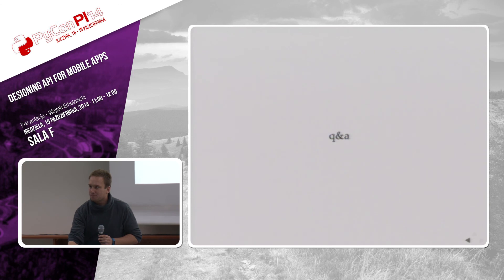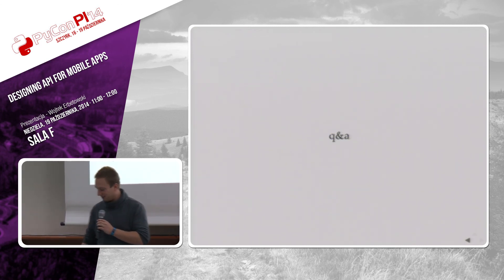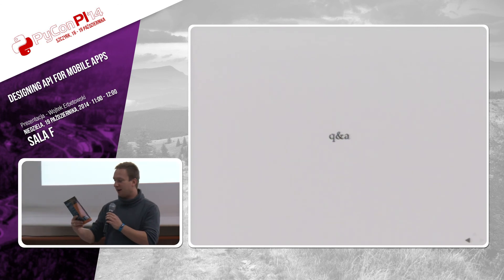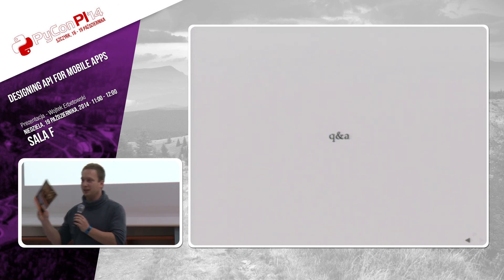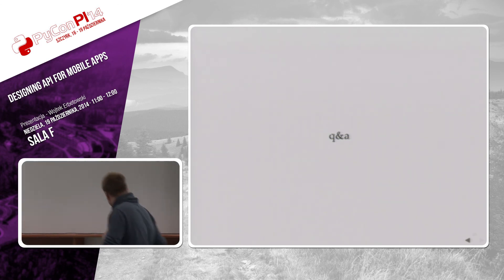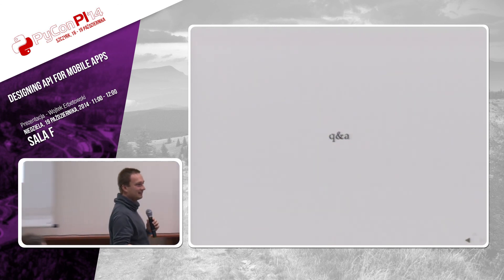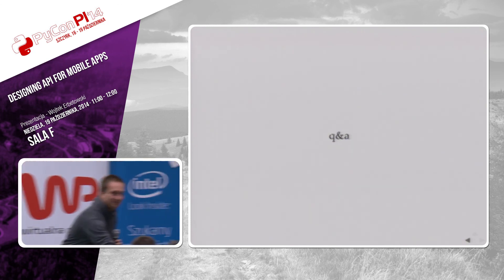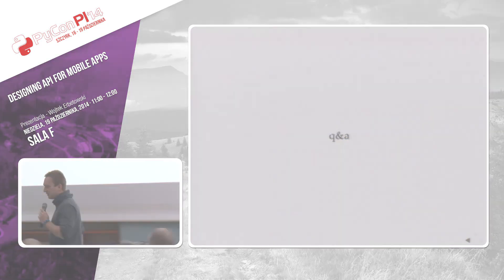Q: Can you recommend further reading for someone who wants to learn to make back ends for mobile applications? A: I have no idea — but I'll get you a book: Python High Performance Programming. It's really thin, so it must be really easy. Thank you, guys. No more questions. Thank you very much. See you next year.